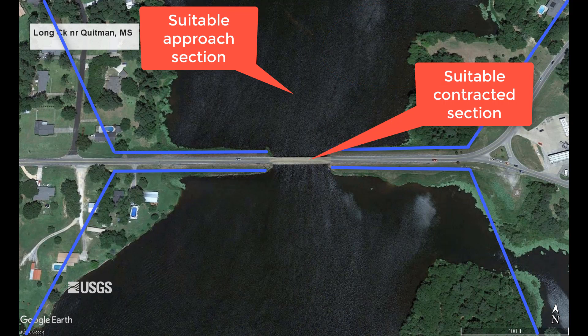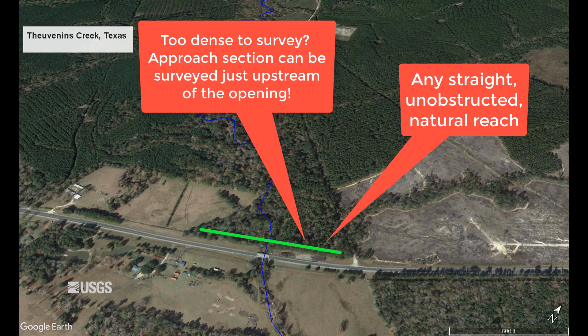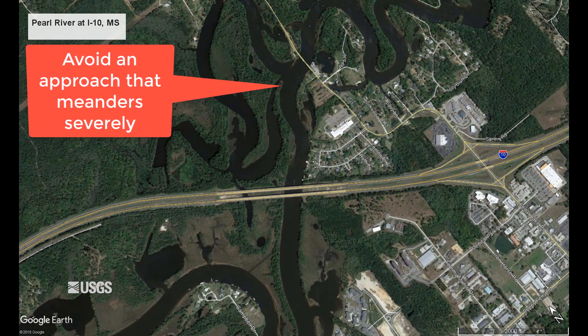What does a good approach section look like? Any straight, unobstructed natural reach representative of one bridge width upstream will do. In a situation where the upstream cross section is too dense to survey, the approach section can be shot just upstream of the contracted opening — we assume this cross section has equal ground elevations and can still treat it as if it were one bridge width upstream. We still need to shoot the high water marks upstream regardless of where the approach cross section is shot. If there is one thing to avoid when picking an approach section, it would be to avoid a reach that meanders severely — if the main channel is winding back and forth throughout the floodplain, the energy losses cannot be correctly evaluated.